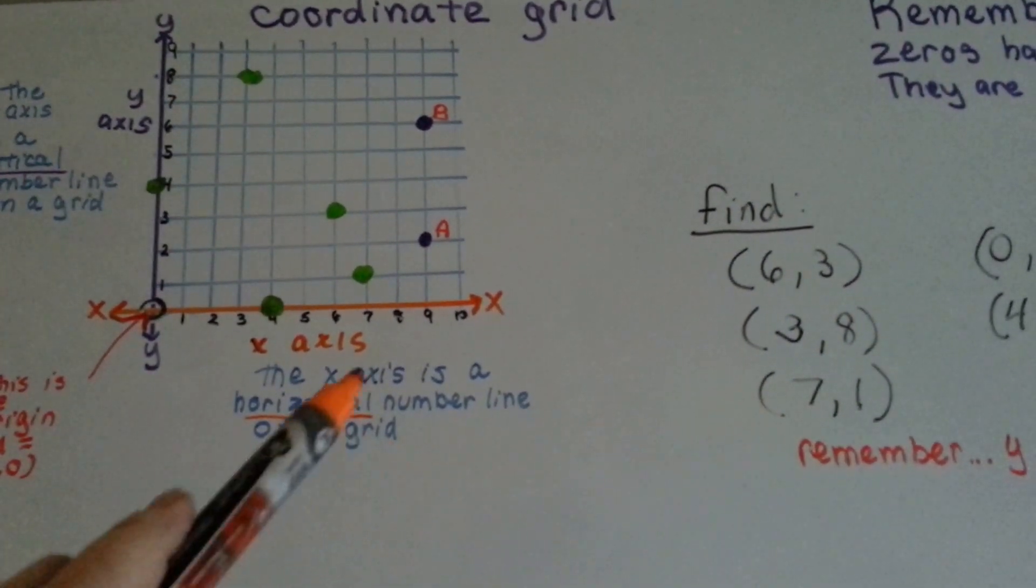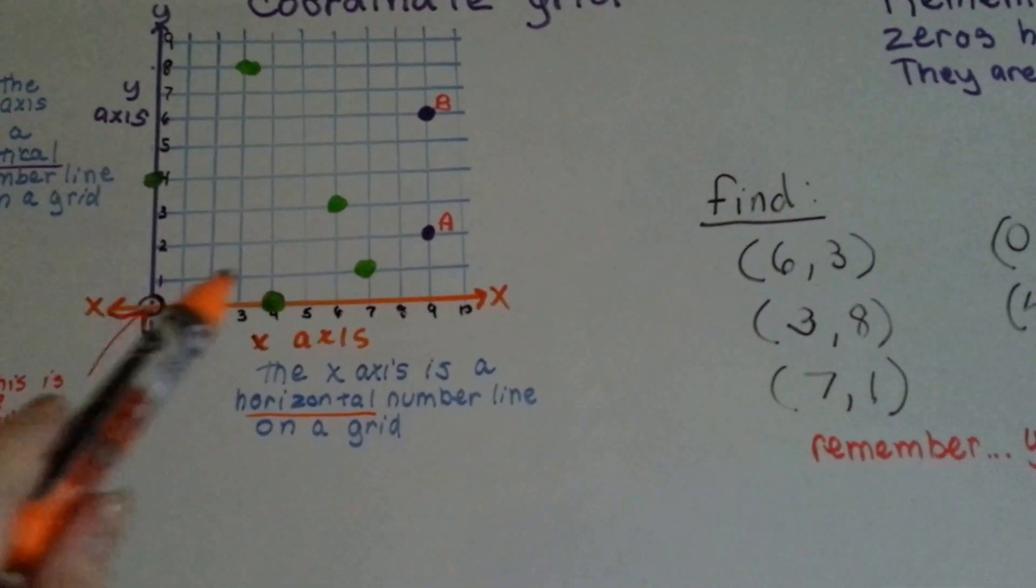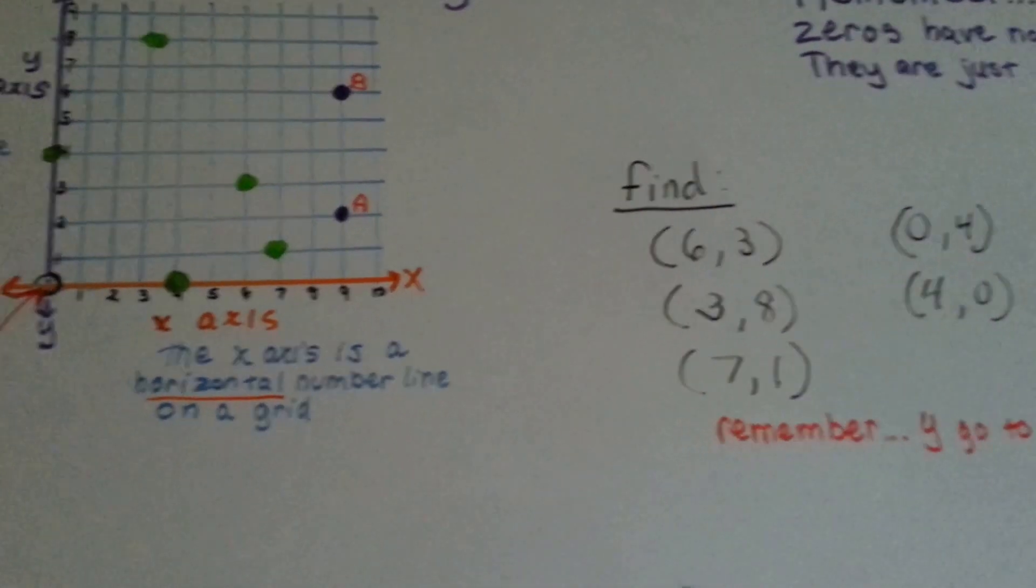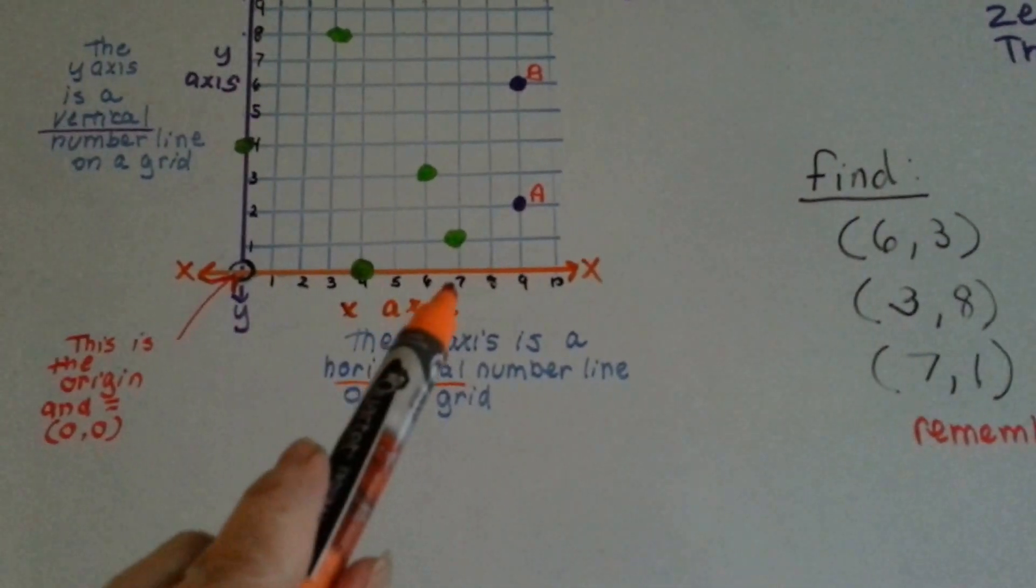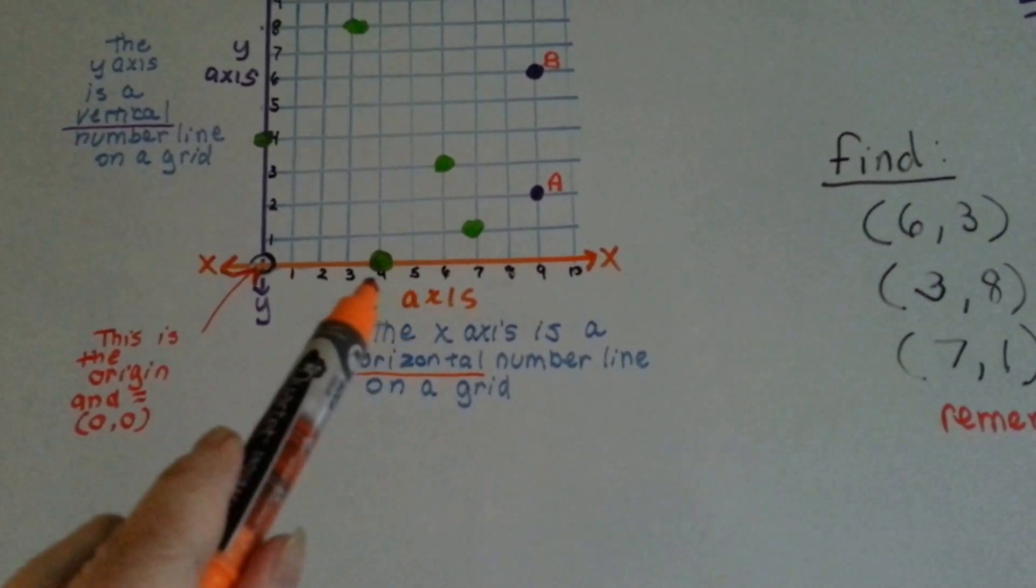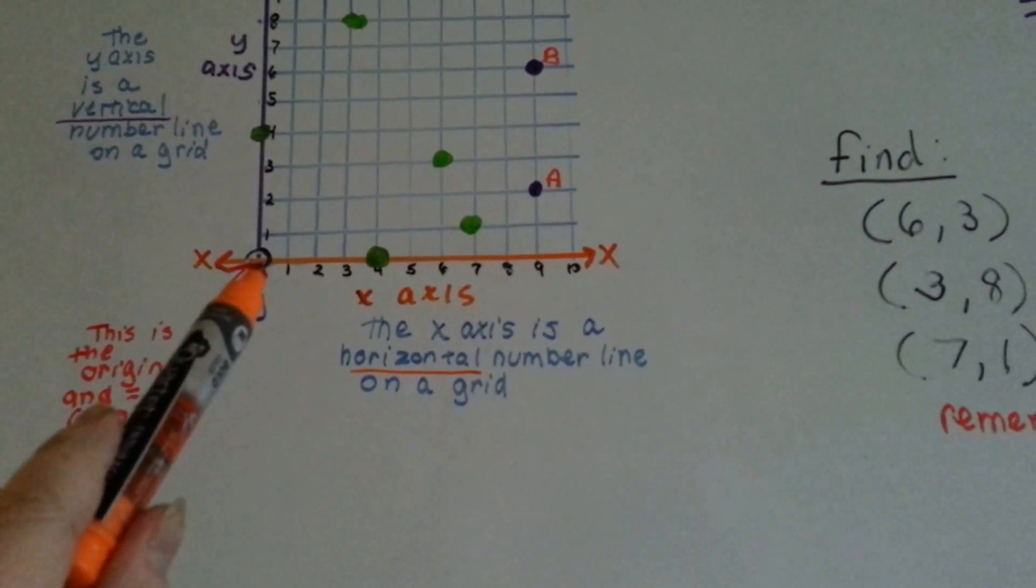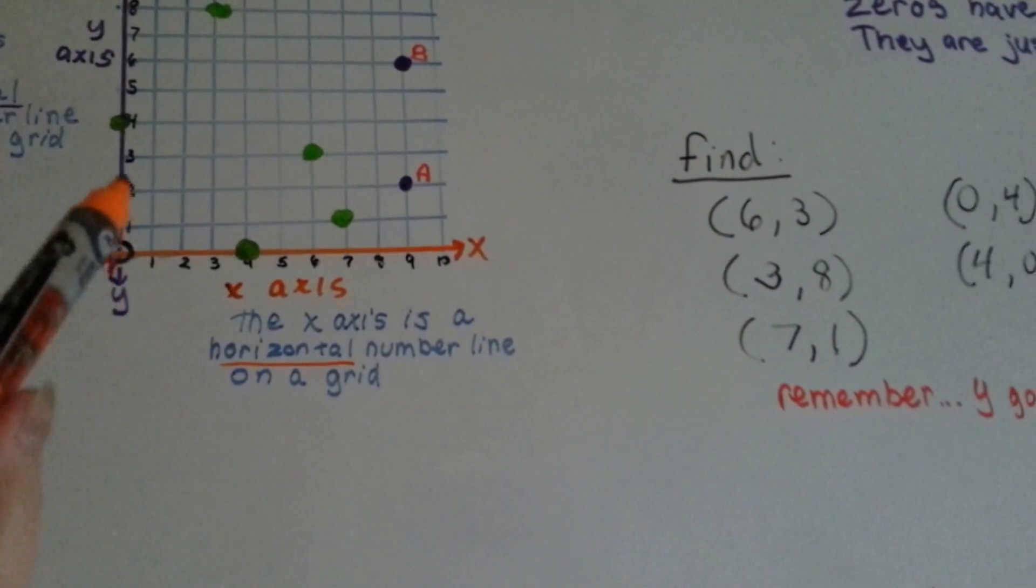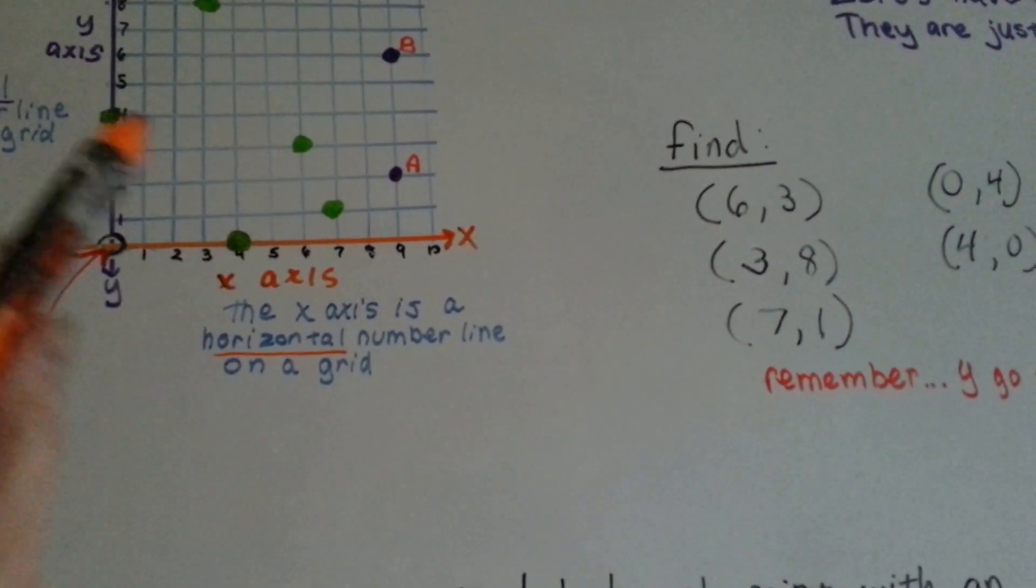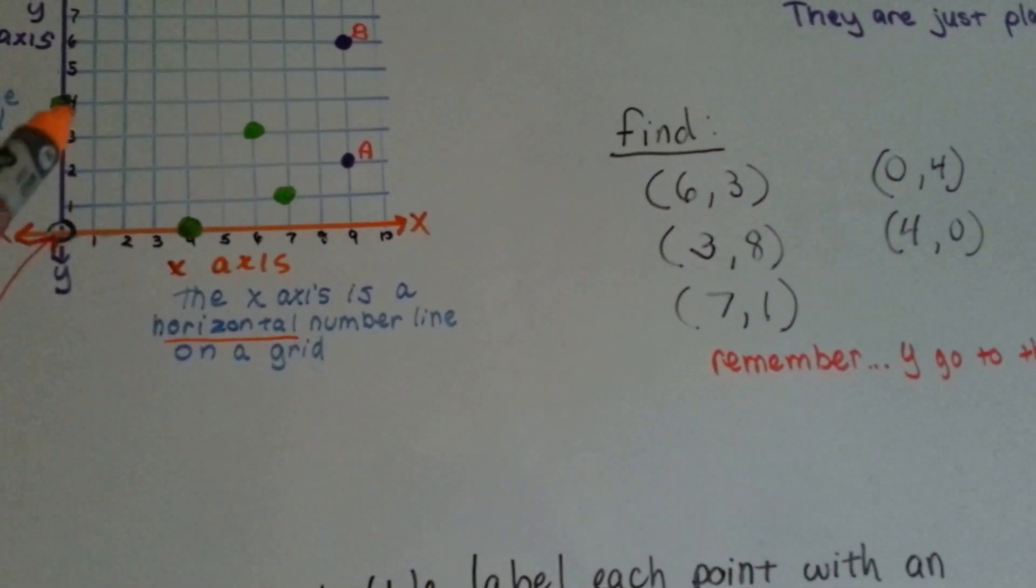To find 7, 1, we go to 7 on the x, right here, and 1 on the y. Now, what if we wanted to find 0, 4? That means the x is 0. If this is 7, and this is 6, and this is 5 on the x, then this must be 0 for the x. And the y is 4, so we go up to 4. It's actually on the y's line. There is no location for the x. We just go to 4 on the y.